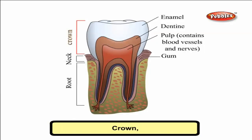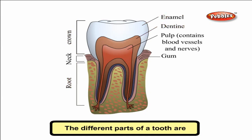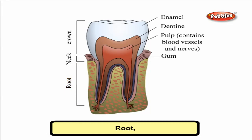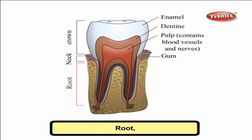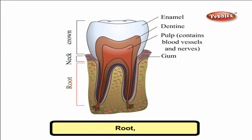Now, parts of a tooth. Let's see the basic structure of a tooth — it is common for all types of teeth. The different parts of a tooth are: crown, root, enamel, dentine, pulp and blood vessels.